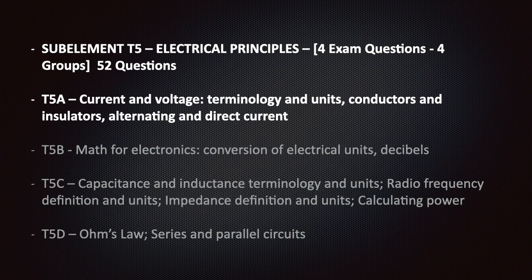The T5 section covers electrical principles. On your randomly generated exam, you'll be asked four questions from this sub-element. There are four groups in this section with 52 questions total. In this video, we will cover group T5A. We will discuss current and voltage, more specifically, terminology and units, conductors and insulators, plus alternating and direct current.